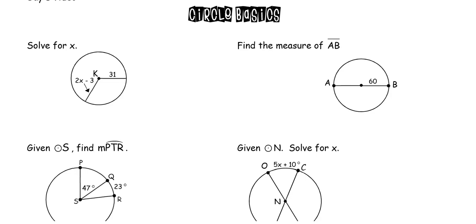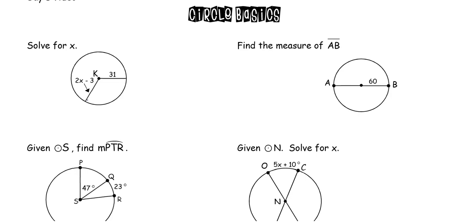Our very first problem: solve for x. We have our circle with a center at K. A radius is a piece coming out of the center, going from the center of the circle to touch the outside of the circle. One of the first things you should know about a circle is that all radii are going to be congruent.